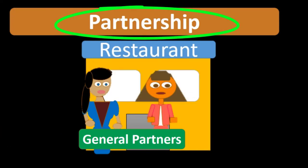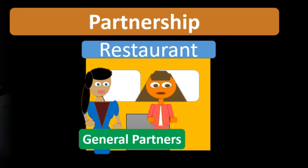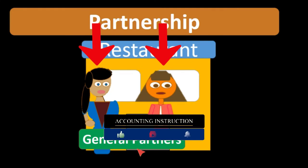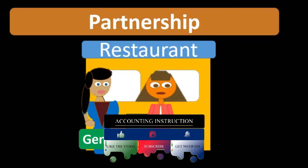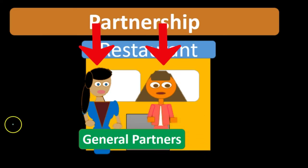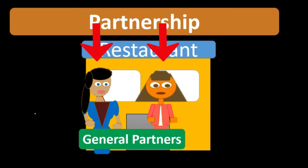Unlike a C corporation, a partnership is not a separate legal entity. While we keep the books separate for record-keeping purposes, the partners' individual assets can be subject to greater liability risk than would be the case in a separate legal entity like a corporation. Additionally, partners act as agents of the business, so if one partner enters into a contract, the other partner is also liable for that contract.